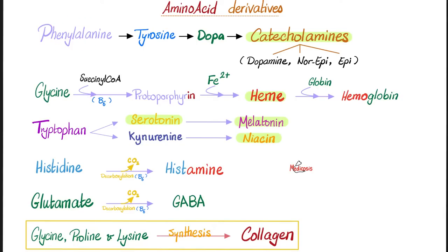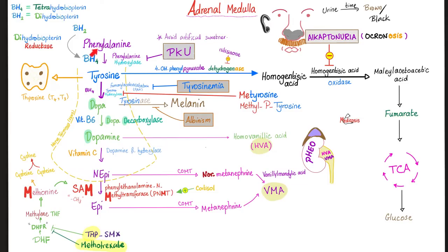Remember that phenylalanine becomes tyrosine, which becomes dopa, which becomes catecholamines: dopamine, noradrenaline, adrenaline — or dopamine, norepinephrine, epinephrine. So here's the complete pathway: phenylalanine → tyrosine → dopamine → norepinephrine → epinephrine, as we have discussed many times before.